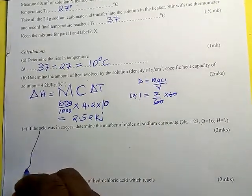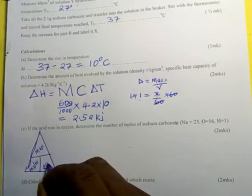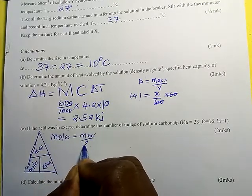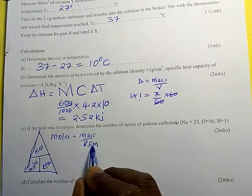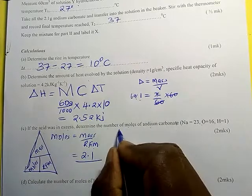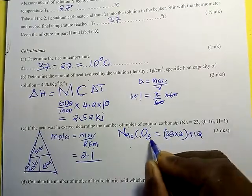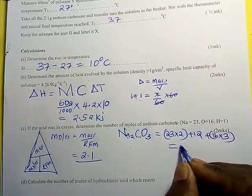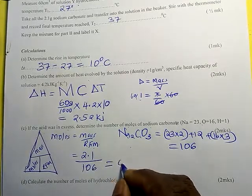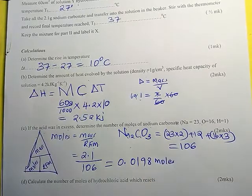We know that moles = mass ÷ RFM. The RFM of sodium carbonate (Na₂CO₃) = (23 × 2) + 12 + (16 × 3) = 106. Therefore, moles = 2.1 ÷ 106 = 0.0198 moles. So the moles of sodium carbonate is 0.0198.